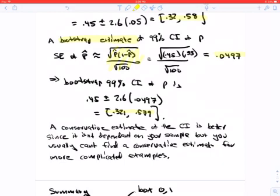So usually you would use a conservative estimate of the confidence interval if you can give that. Otherwise, you would use a bootstrap estimate because the conservative estimate is usually not possible.